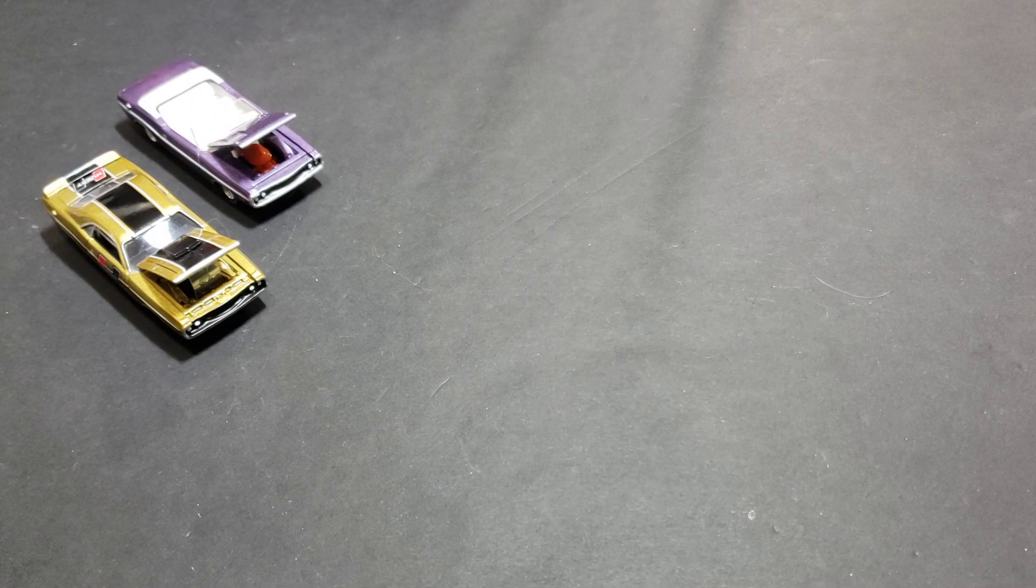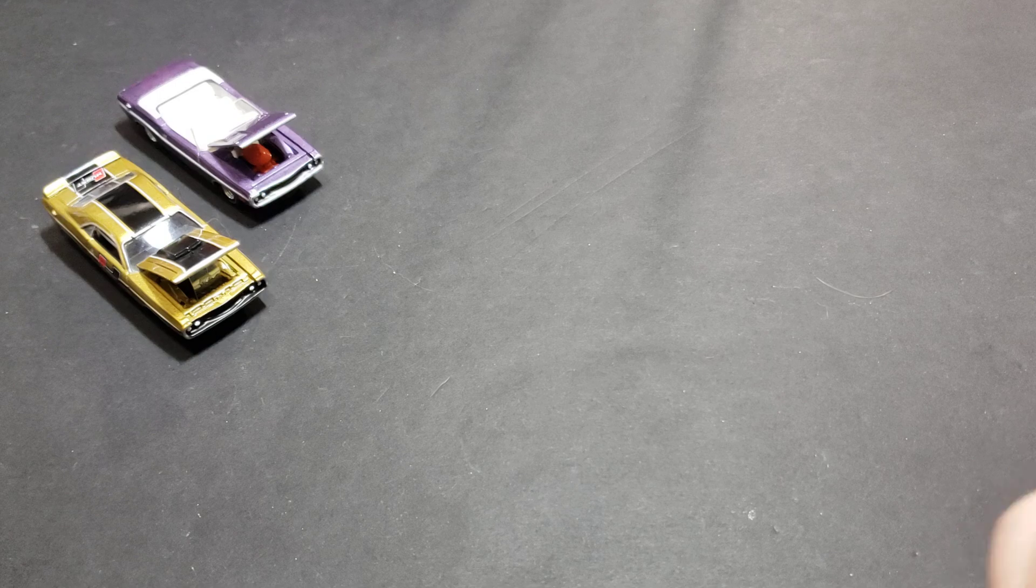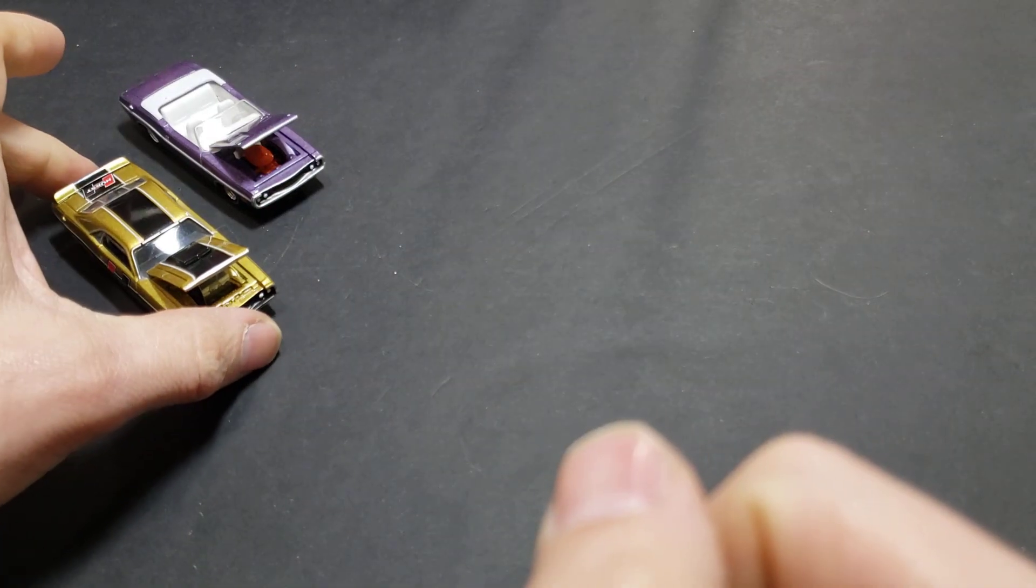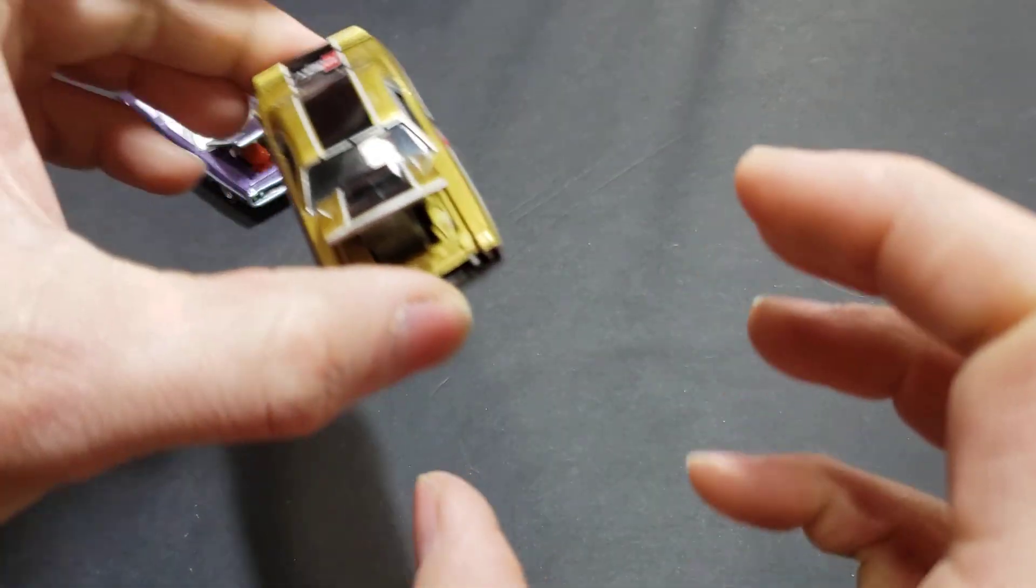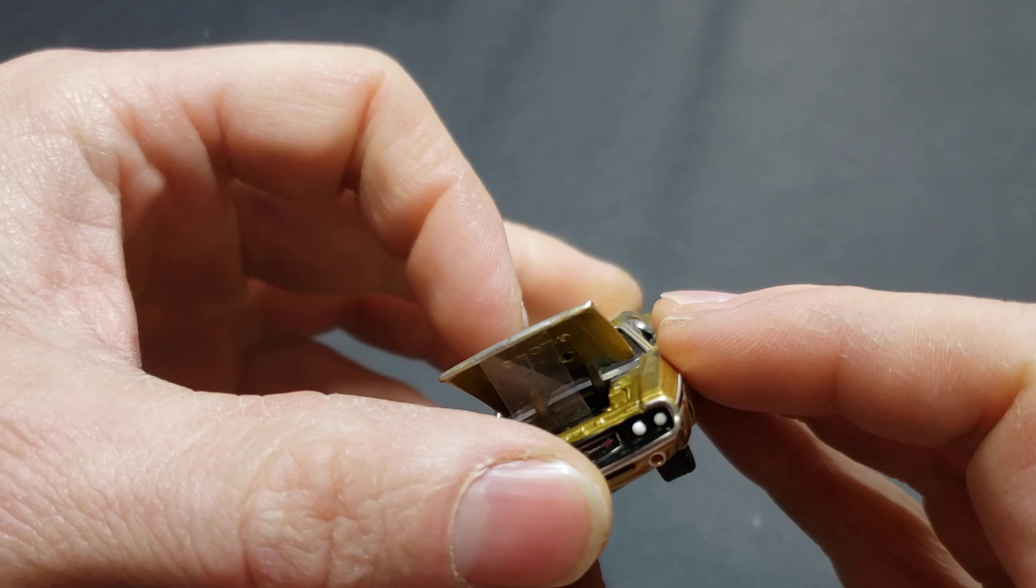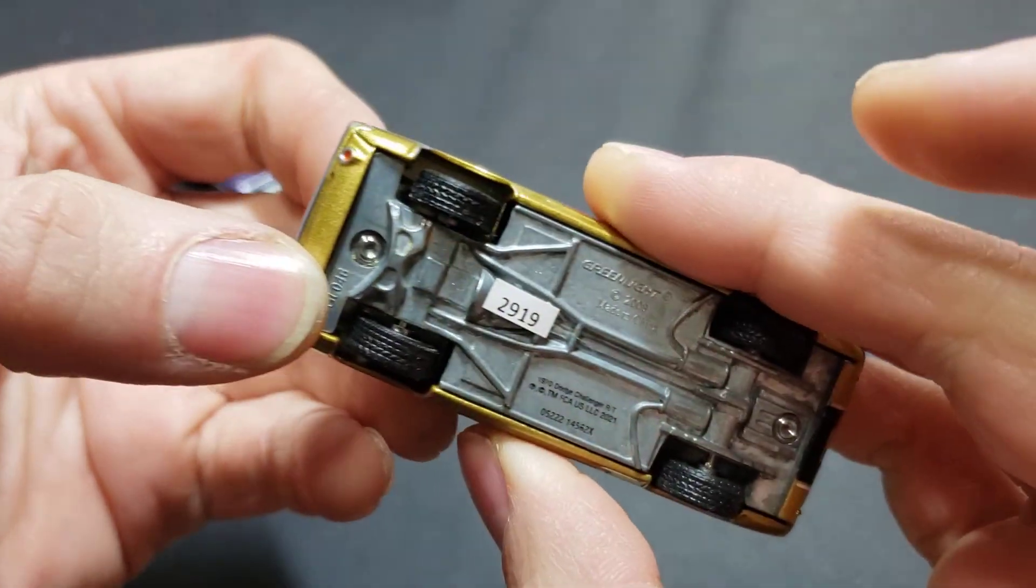Welcome back fans and friends for this upcoming video. I have, obviously you can see, the two Dodge Challengers there. One of them from I believe Running On Empty is this one, and the other one is a Barrett Jackson.